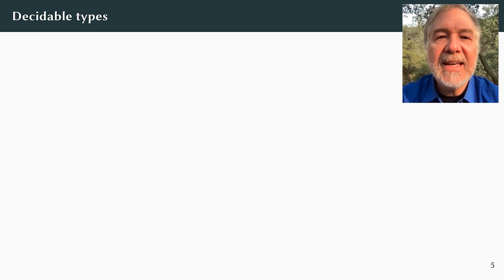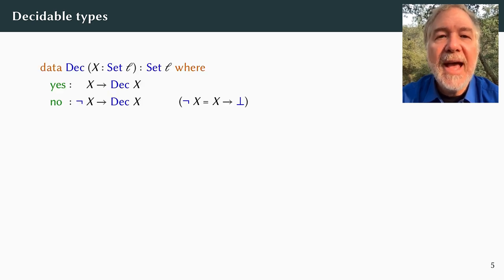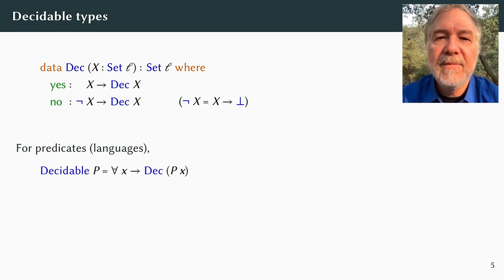Given a language and a candidate string, we can apply the language to the string to yield a type of proofs that the string is in the language. Now we want to construct such a proof or show that one cannot exist, and we can express this goal as a decision data type. A parser for a language is then a computable function that maps an arbitrary string to a decision about whether the string belongs to the language or not.